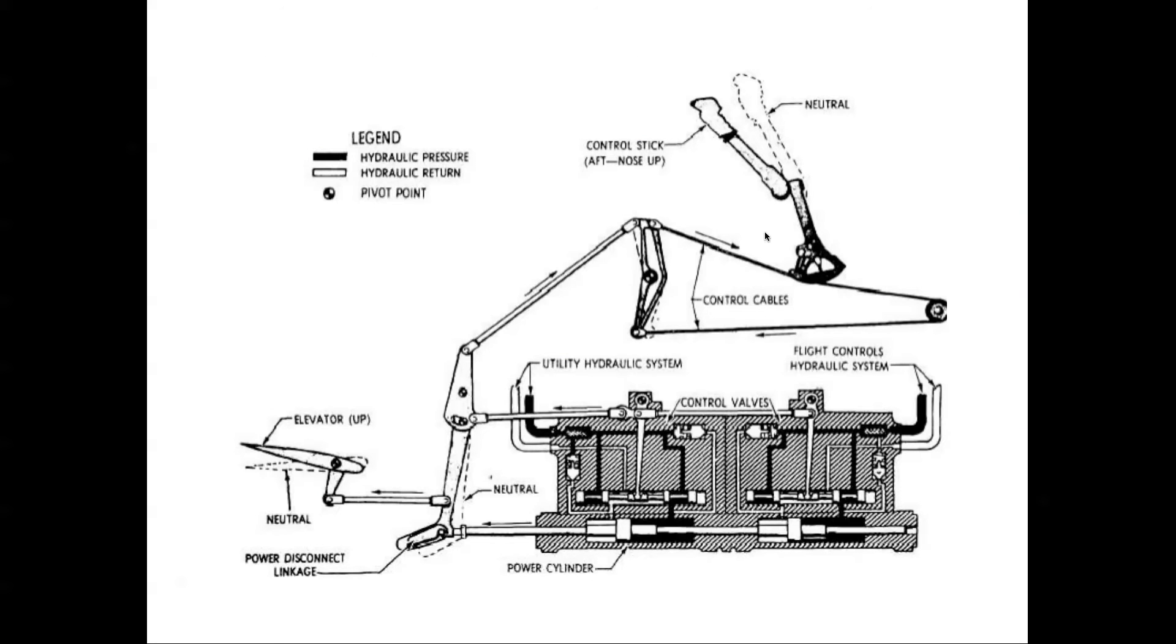This is a schematic of what's going on here. You have the control column, the control cables control a spool valve. The spool valve controls the direction of high pressure fluid and the low pressure fluid. The high pressure fluid and low pressure fluid drive the power cylinder. The power cylinder is connected to a linkage mechanism to the spoiler elevator, and there is also a feedback path right here.